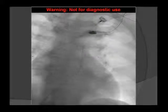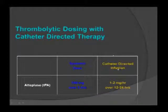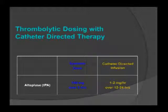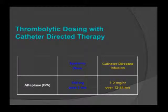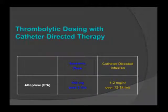For CDT dosing, the systemic dose is classically 100 mg; MOPPET used 50 mg. With catheter-directed infusion, it's typically 1–2 mg/hour over 12–24 hours. Patients have catheters placed, mechanical thrombectomy is performed, some receive a 5–10 mg bolus at the time of procedure, then infusion continues in the ICU. This approach is tailorable — for very high-risk patients such as recent CNS neoplasm removal, mechanical thrombectomy alone without thrombolytics is an option.